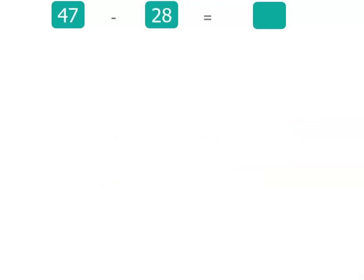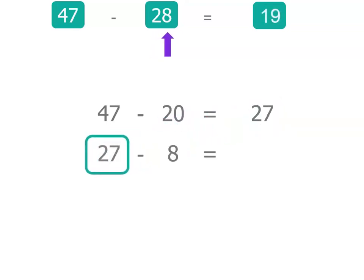What about if we do one without models? 47 minus 28. Let's actually take away the tens first this time. We've got 47, and if we subtract 2 tens, that's like subtracting 20. 47 minus 20 is 27. But remember, we still need to subtract those 8 units, so let's take what we've got left, which is 27, and subtract 8.